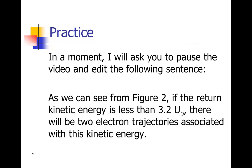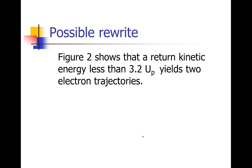Let me show you my edit for this sentence — you might not get exactly the same thing, but hopefully you're cutting a lot of the same words. 'As we can see from figure two' — let's just say 'figure two shows.' That 'as we can see from' is just a lot of extra words; we can say it directly, or even just reference figure two in parentheses at the end. Figure two shows that a return kinetic energy less than 3.2 UP — that becomes the subject of the clause — yields two electron trajectories. We don't need to repeat 'kinetic energy.' So: figure two shows that a return kinetic energy less than 3.2 UP yields two electron trajectories.